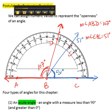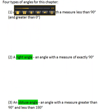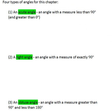All right, now that we can assign numeric values to represent the openness of angles, we'll look at four special angles that appear a lot in geometry. The first one is an acute angle. An acute angle is any angle that has a measure in between 0 and 90 degrees.